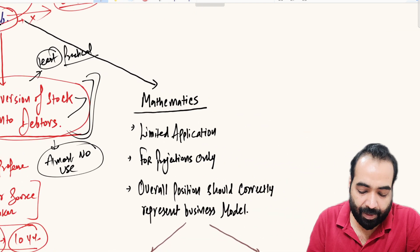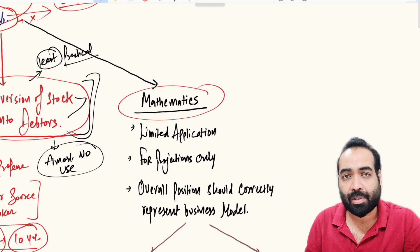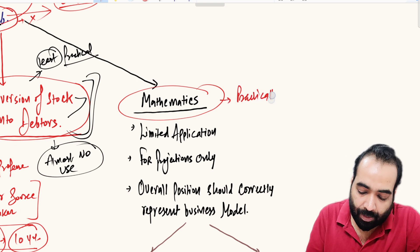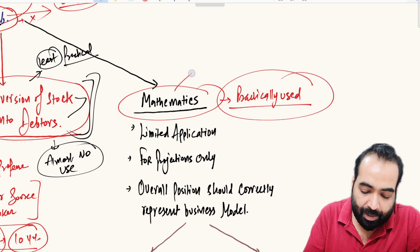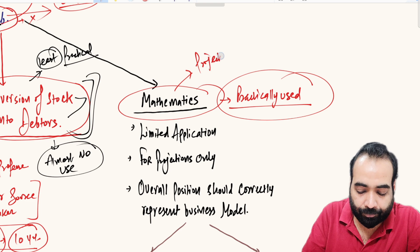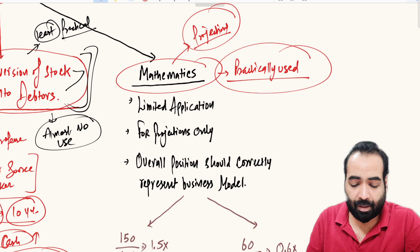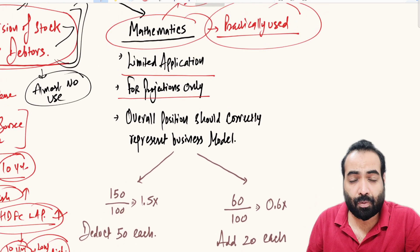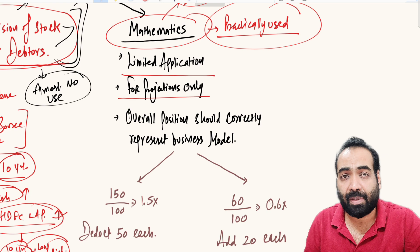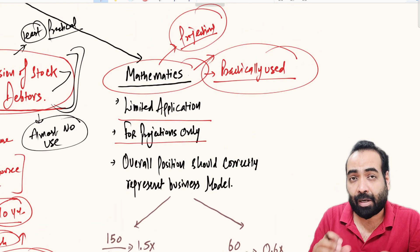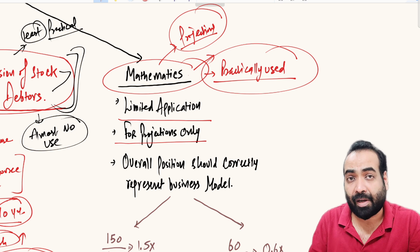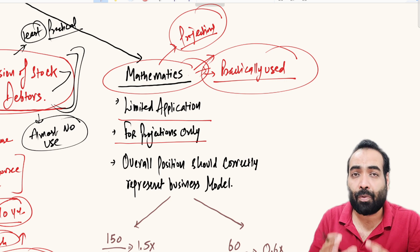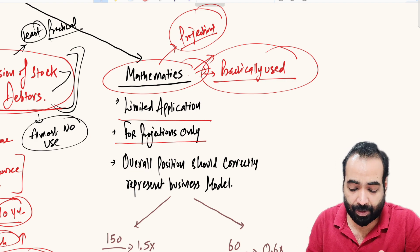The third way is a very practical, mathematics-based approach where you change some data to improve the current ratio. This method is practically used but has one restriction: it can only be used in projections, not on past data. Before applying this method, you need to fully understand the business model, and the revised figures of current assets and current liabilities should be justifiable and should truly reflect the actual business model of the client — they should not be vague figures.